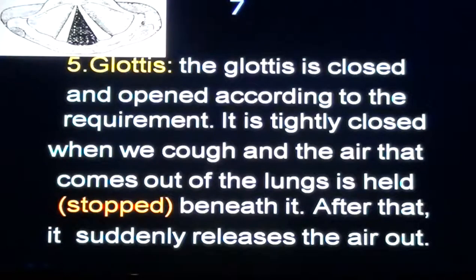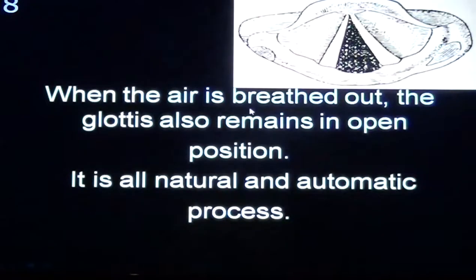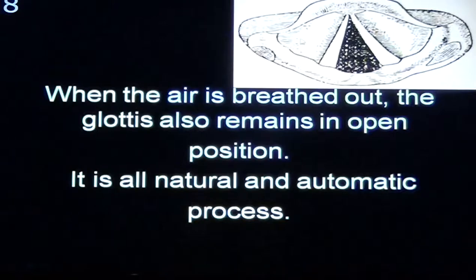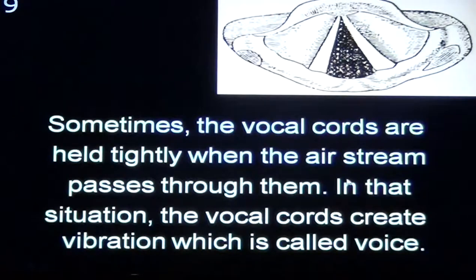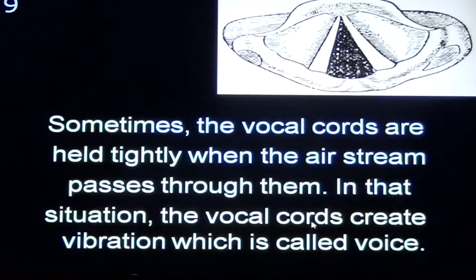The glottis is closed and opened according to requirement. This area of the vocal cords is called the glottis — it can be closed or opened accordingly. It is tightly closed when we cough, and the air from the lungs is held beneath it, then suddenly released. When air is breathed out, the glottis remains in open position. Sometimes the vocal cords are held tightly and the air stream passing through them creates vibrations — this is called voice. Some sounds are voiced and some are voiceless, created through the vocal cords.